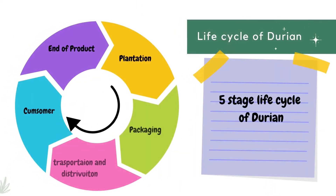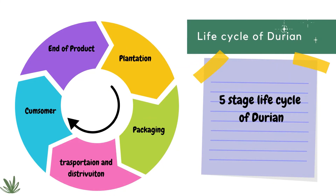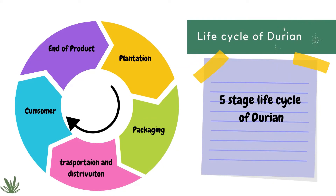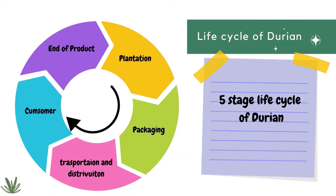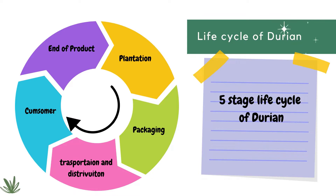Let's move on to the life cycle of durian. The life cycle of durian consists of five stages: plantation, packaging, transportation and distribution, consumer, and end of product.